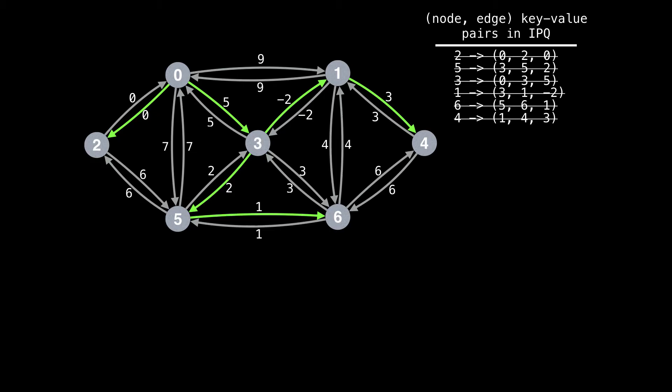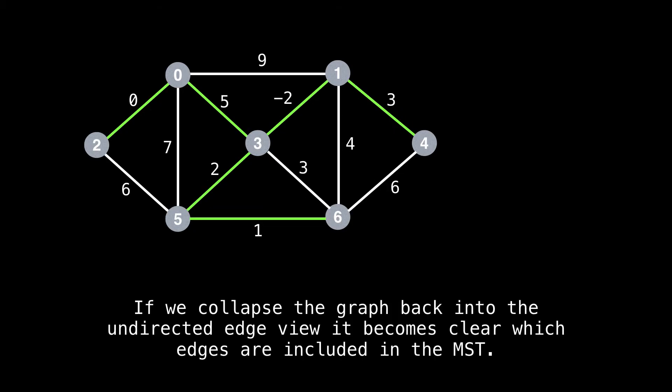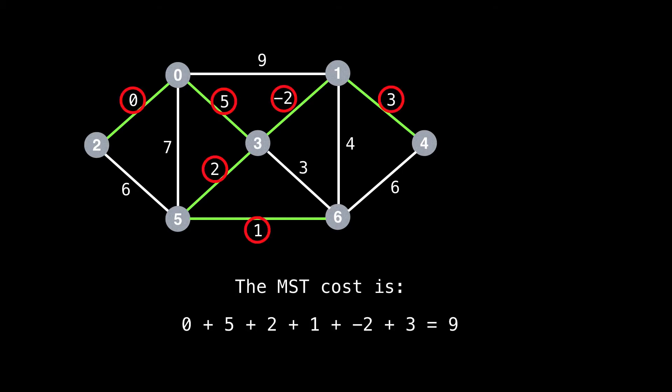And that's the algorithm. You can see that the minimum spanning tree we found consists of the edges highlighted in green. If we collapse the graph back into its undirected edge view, it becomes clear which edges are included in the minimum spanning tree. You can also get the MST cost by adding the values of all the edges in the spanning tree, for a total cost of nine.